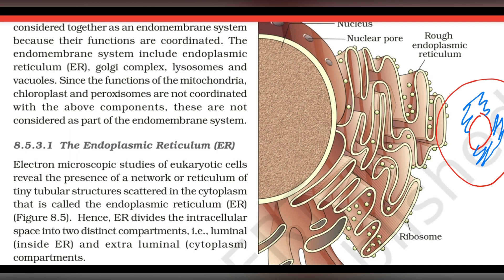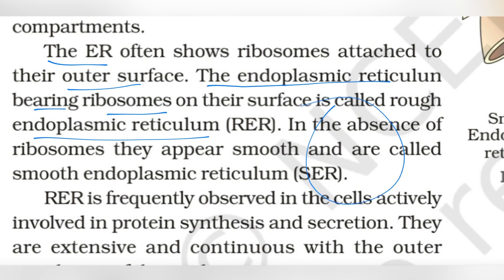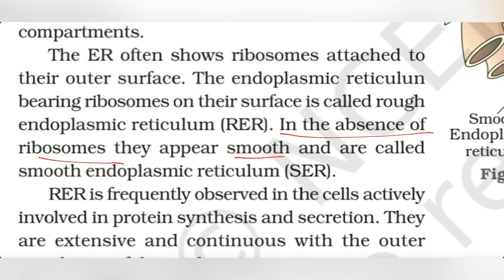The endoplasmic reticulum is divided into two parts. The central space is called the lumen, shown in blue in the diagram. The cell is divided into two compartments. When ribosomes are attached to the outer surface of the endoplasmic reticulum, it is called rough endoplasmic reticulum, or RER. The nucleus is also connected to the endoplasmic reticulum.